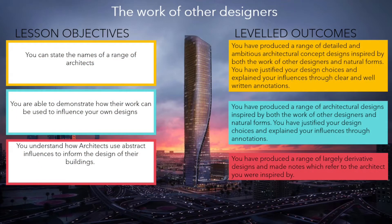So here's our level ladder. The objectives for today are that you can state and name a range of architects, you're able to demonstrate how their work can be used to influence your own designs, and that you understand how architects use abstract influences to inform the design of their own buildings and their own work.